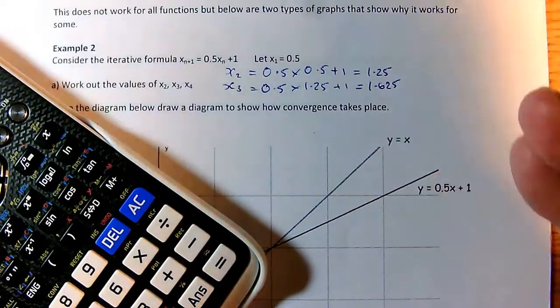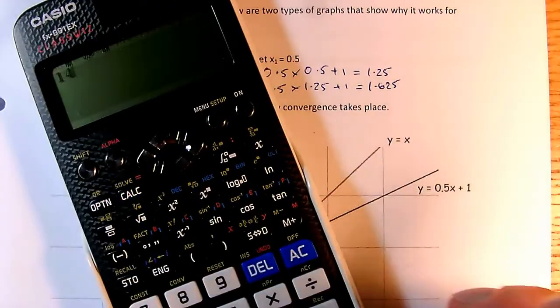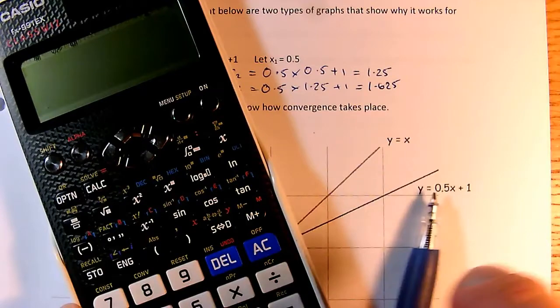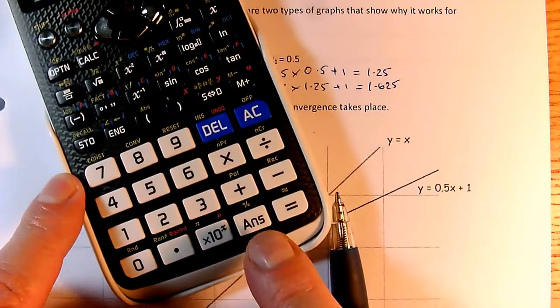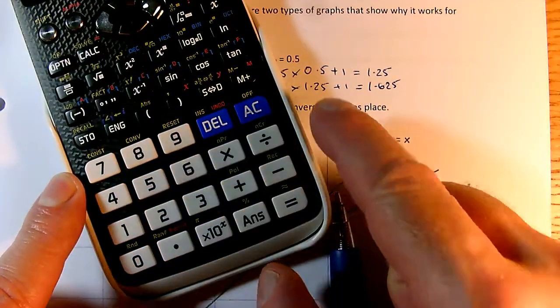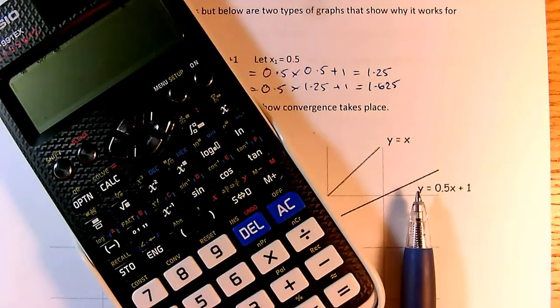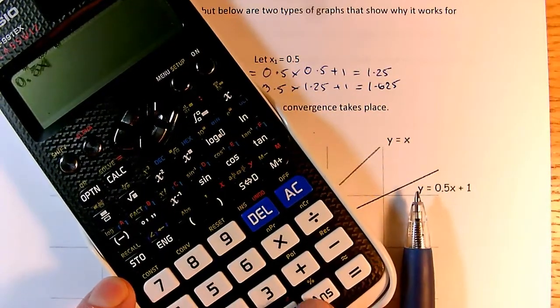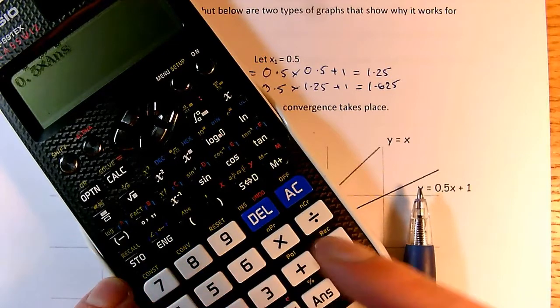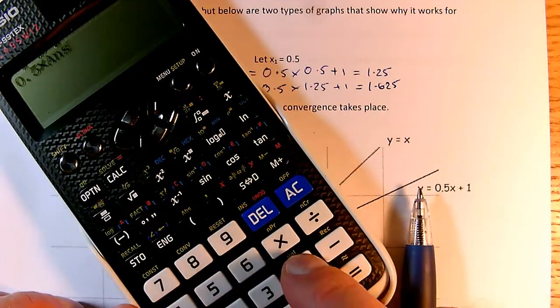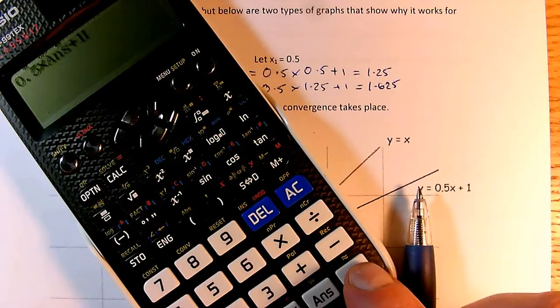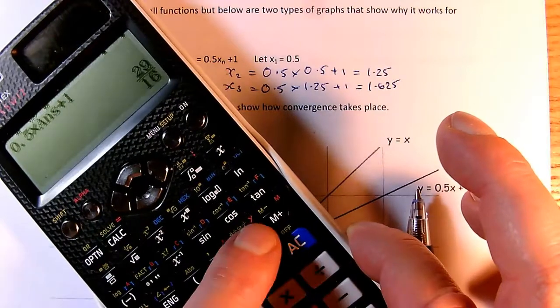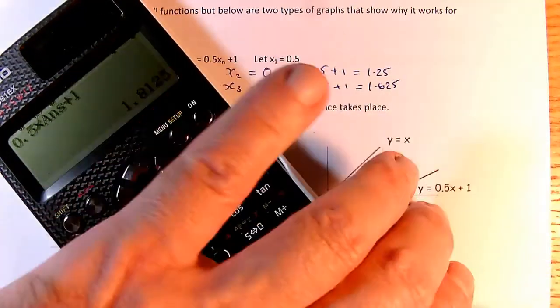And I keep going. Now there's a nice thing you can do on the calculator, actually. If you want to keep recycling the previous answer, we can use the answer button down here. So, if I want to do 0.5 times the previous answer, type in 0.5 times, and then I press that answer button, and that means 0.5 times the previous answer plus 1. So, my next value, which is going to be x4, is simply 29 sixteenths, which is 1.8125.